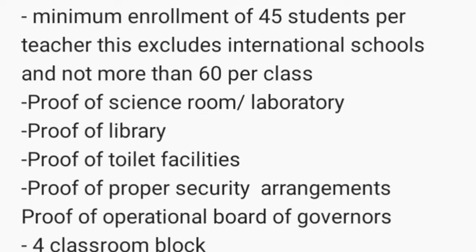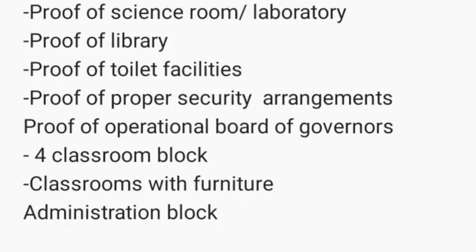For a secondary school, you also need to show proof of a science room or laboratory, a library, toilet facilities, proper security arrangements, proof of an operational board of governors, classroom blocks with furniture, and an administration block. These are the key specifics when it comes to opening a secondary school in Uganda.